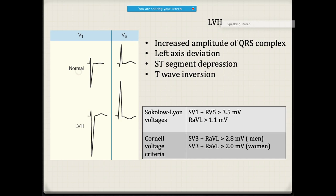To identify ventricular hypertrophy, you should know the various criteria. There are the Sokolov-Leon voltage criteria and the Cornell voltage criteria. In Sokolov-Leon criteria, S wave in V1 plus R wave in V5 should be more than 3.5 millivolts, and the R wave in AVL should be more than 1.1 millivolt. For Cornell criteria, S wave in V3 plus R wave in AVL more than 2.8 millivolts for men, and more than 2.0 millivolts for women.